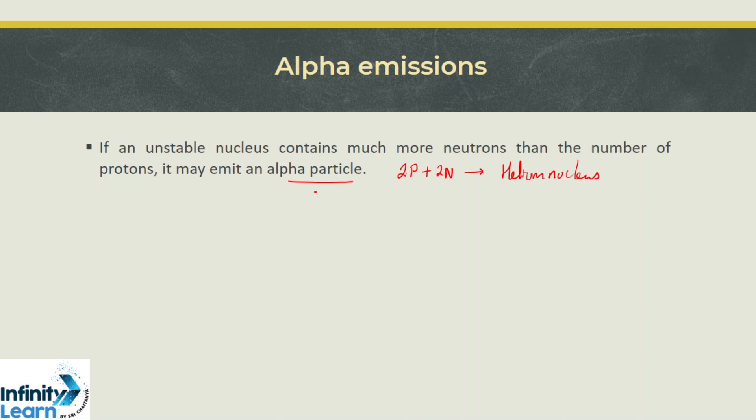Alpha particles contain two protons and two neutrons, which is a helium nucleus. The stream of alpha particles are called alpha rays. If we consider a nucleus X with atomic number Z and atomic mass number A, after emission of an alpha particle, the number of protons decreases by 2 and the number of neutrons also decreases by 2.